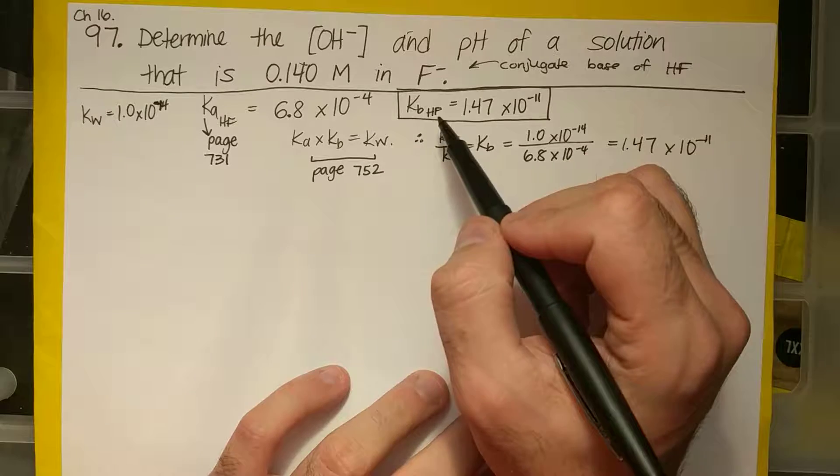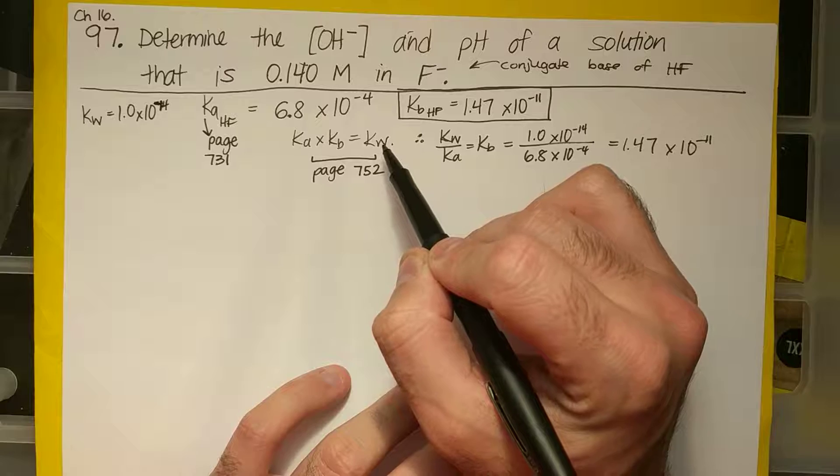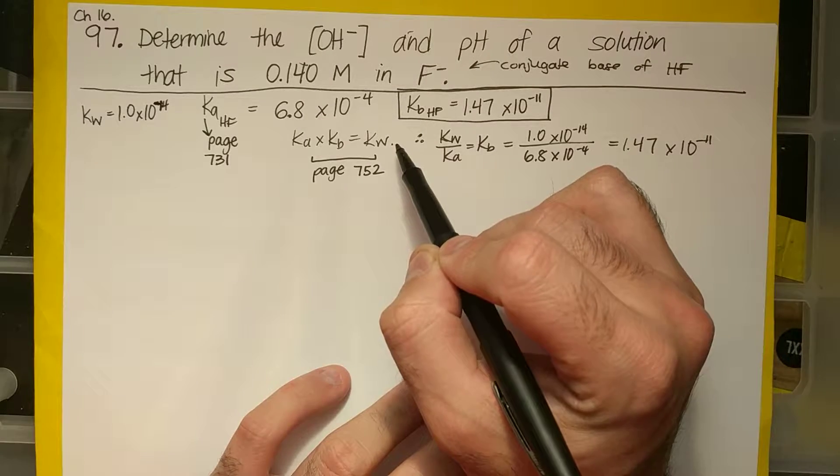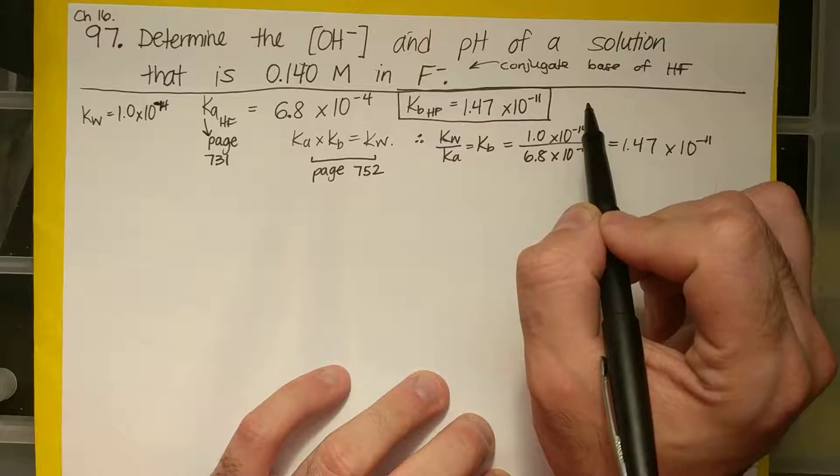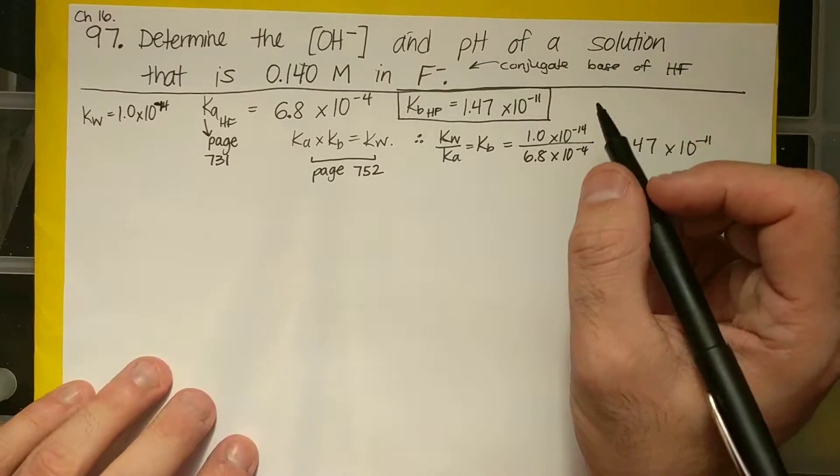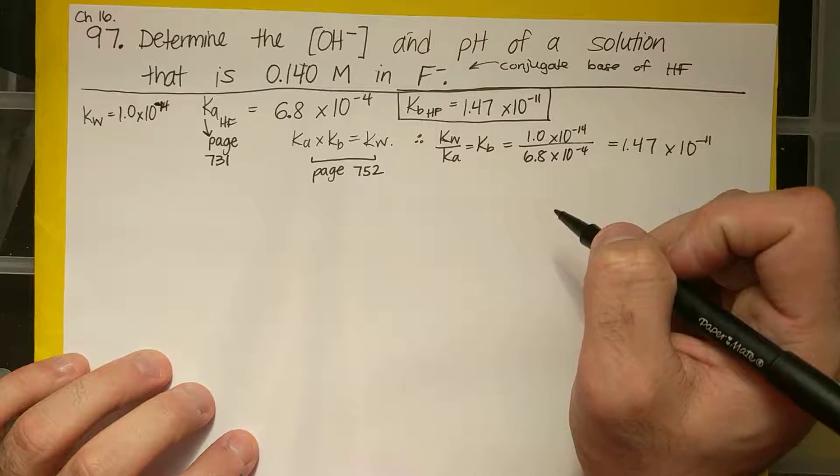For a base like this, I'm going to need the KB. If I have a base, I can't use the acid dissociation constant to do my equilibrium business. So just as a heads up, one of my first steps is to solve for the KB. Now we're going to do an ICE table. Before I do the ICE table, I have to figure out the equation.